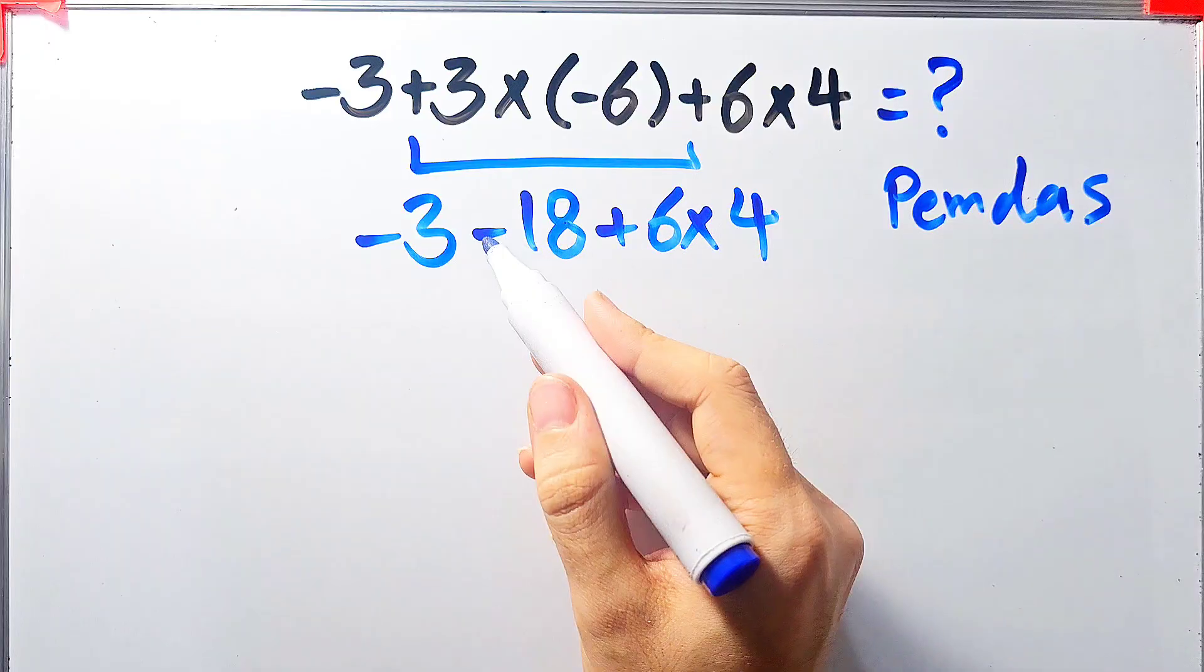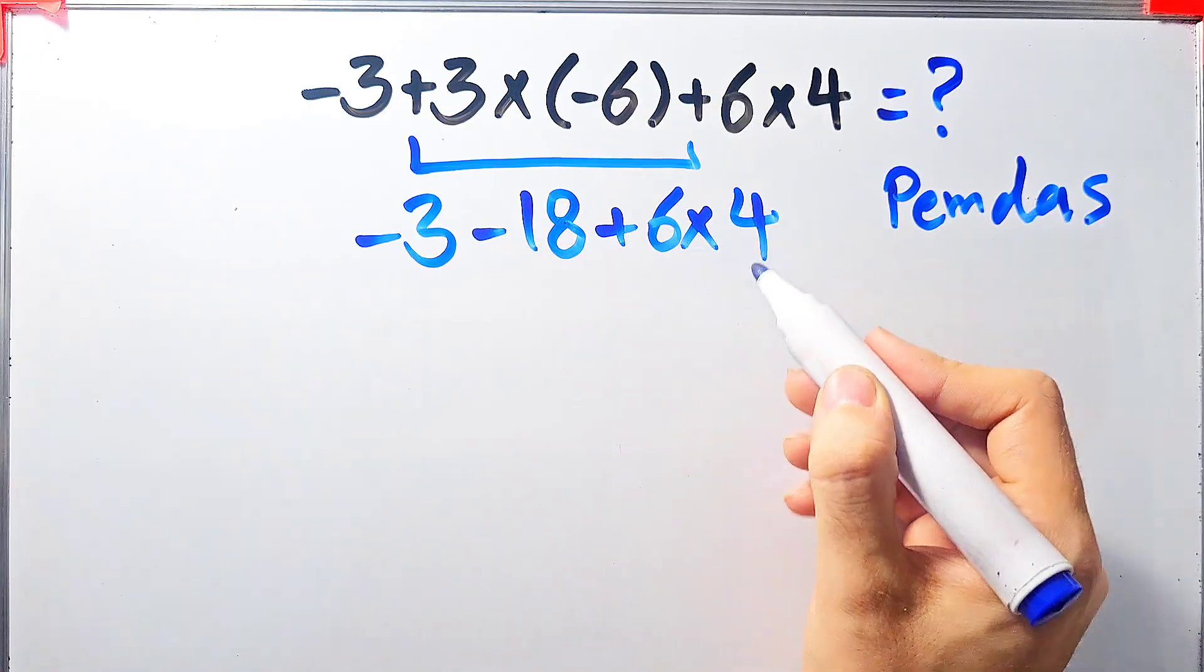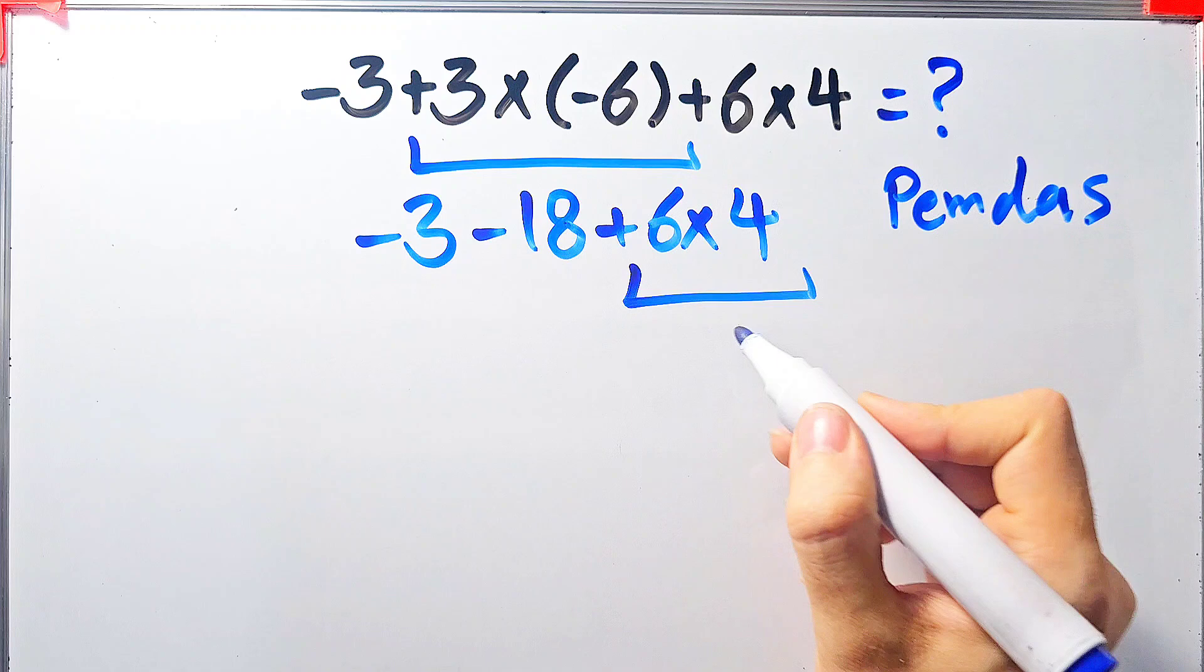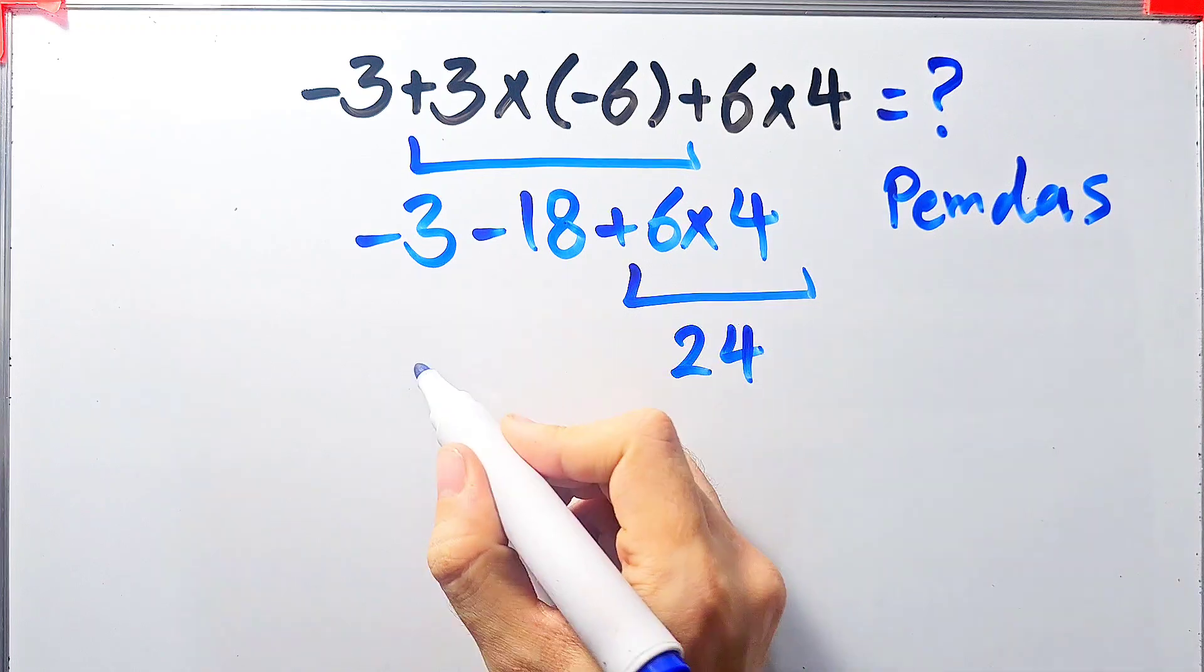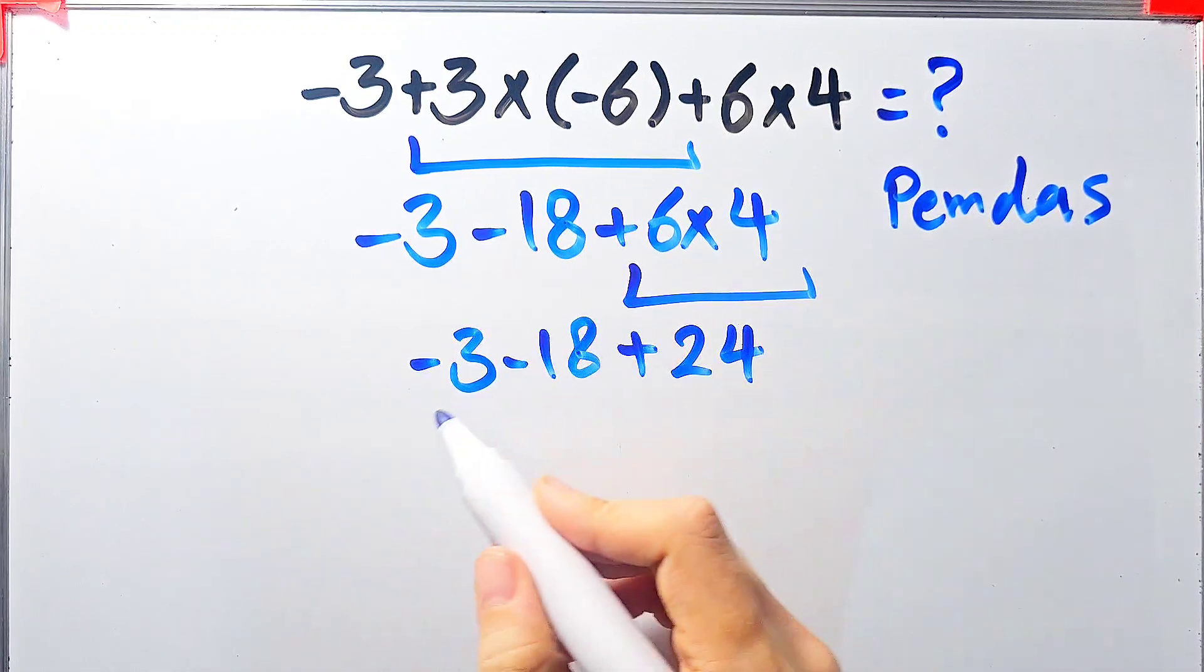Now we have subtraction, addition and multiplication. First we simplify this multiplication: 6 times 4 equals 24. We have negative 3 minus 18, then plus 24.